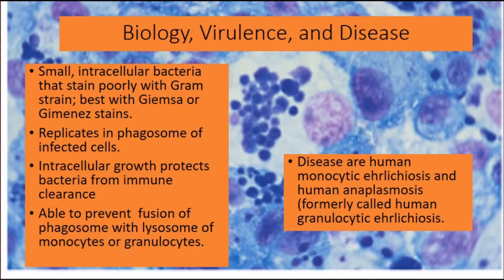These are very small intracellular bacteria that stain poorly on the gram stain. They replicate inside phagosomes of infected cells, and intracellular growth protects the bacteria from immune clearance — you can actually see that happening in the background photo. They also have the ability to prevent fusion of the phagosome with the lysosome of monocytes and granulocytes.